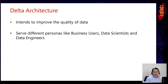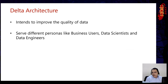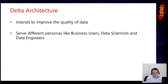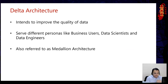The Delta architecture can serve multiple personas. Data engineers can pick up data from it and process it. Machine learning engineers and data scientists can take cleaned, granular data to build their models. Business users can extract data — for example, in Power BI you should be able to get data from this architecture. This is also referred to as Medallion architecture, and we'll understand how to build it using Delta Live Tables.